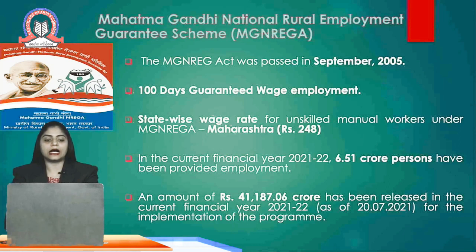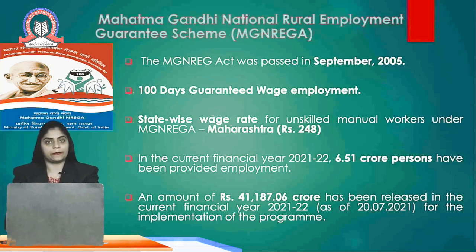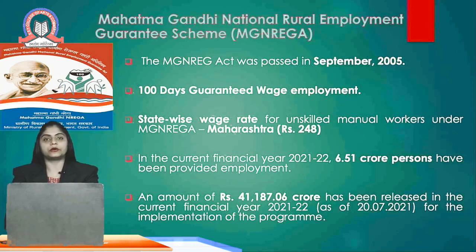The first scheme is Mahatma Gandhi National Rural Employment Guarantee Scheme. This scheme was introduced in September 2005. Under this scheme, a guarantee of 100 days of employment is given. The wage rate differs state-wise. In Maharashtra, wages are 248 rupees per day. In the financial year 2021-22, 6.51 crore persons were provided employment, and approximately 41 lakh crore rupees were released for implementation of this scheme.